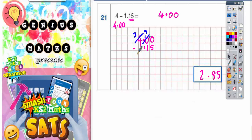Now we can do it. So 10 take away 5 is 5. 9 take away 1 is 8 and 3 take away 1 is 2. So your final answer is 2.85 which is exactly what we got here.